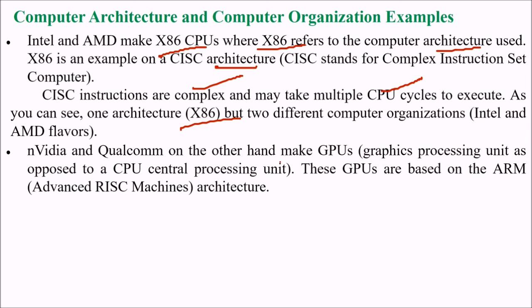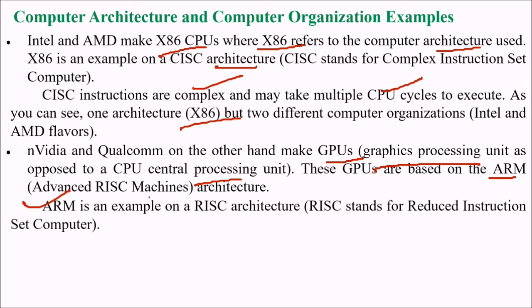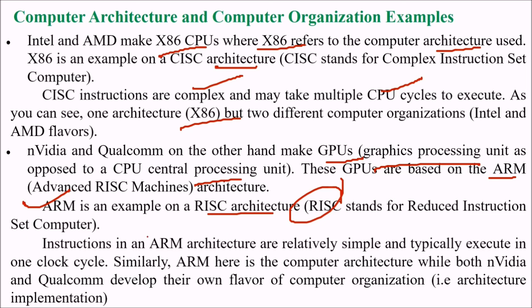Nvidia and Qualcomm, on the other hand, make GPUs — Graphical Processing Units — as opposed to CPUs. These GPUs are based on ARM, or Advanced RISC Machine, architecture. ARM is an example of a RISC architecture — Reduced Instruction Set Computer. Instructions in an ARM architecture are relatively simple and typically execute in a single clock cycle. ARM is the computer architecture, while both Nvidia and Qualcomm have their own flavor of computer organization as the architecture implementation.